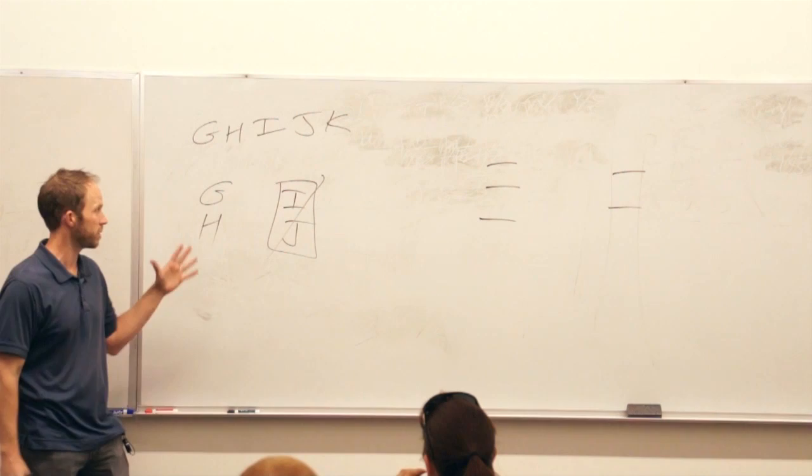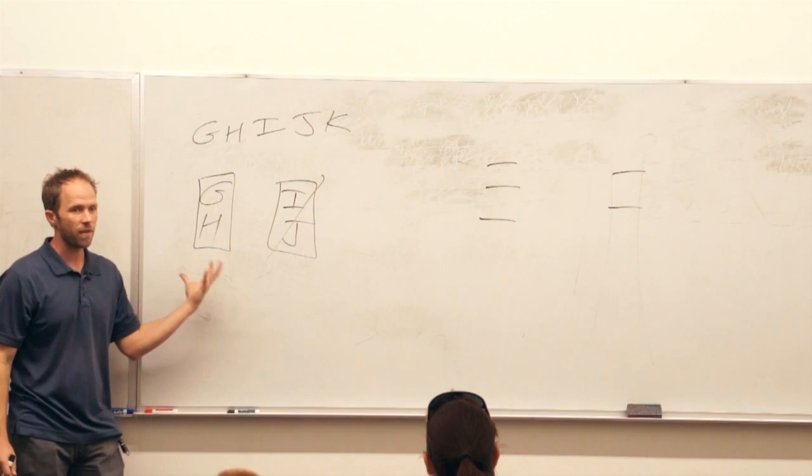This is super common, by the way. This happens on almost every test. You end up with a situation that looks a lot like this. If G and H have to be together, it seems like they could go here or here and satisfy that rule.